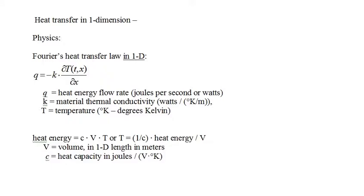The minus sign indicates that heat flows from areas of high temperature to areas of low temperature. The units of the thermal conductivity constant k are watts divided by degrees Kelvin divided by meters, so that when k is multiplied by the spatial derivative of temperature, the result is in watts. T is temperature in degrees Kelvin. We need one more fact: the relationship between temperature and heat energy is linear, given by heat energy equals c, the heat capacity of the material, times v, volume, times temperature.